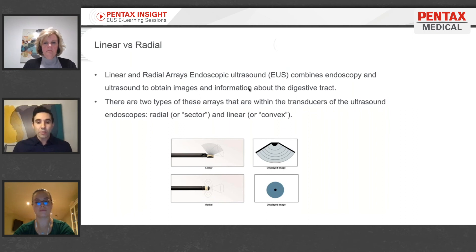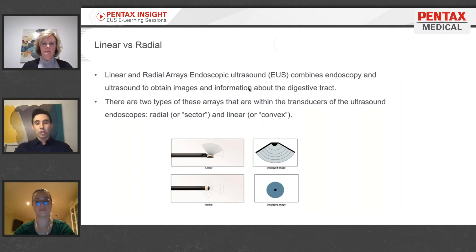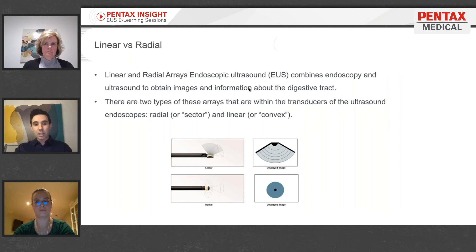The 360-degree imaging gives you a very logical approach to visualization. For example, when you're in the esophagus and you put the aorta on the left, you know what should be on the right side just by virtue of thinking of yourself in a cylinder looking around. The linear scope, on the other hand, is a little different. The best way to describe it is a swimmer in a pool with their head looking toward the bottom — you don't see to your sides or above, but you're looking at the pool floor, and if there were something to grab, you could reach down. That's the convex imaging you obtain with the linear endoscope.